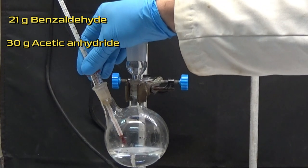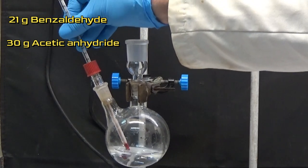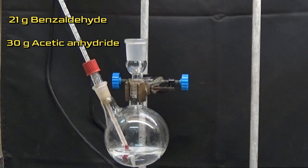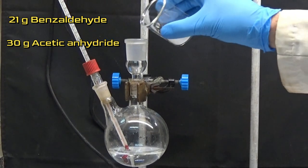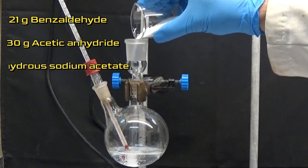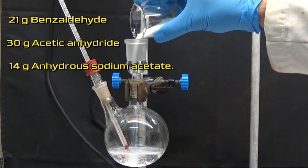Put a thermometer in the flask and add 14 grams of sodium acetate.